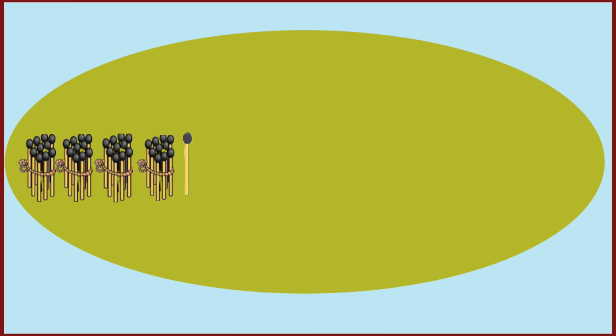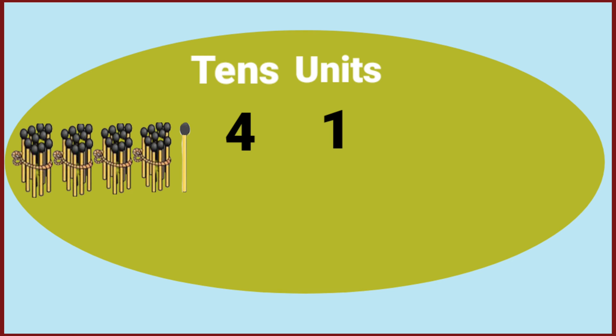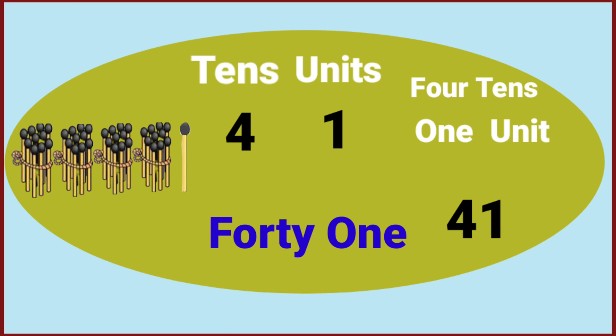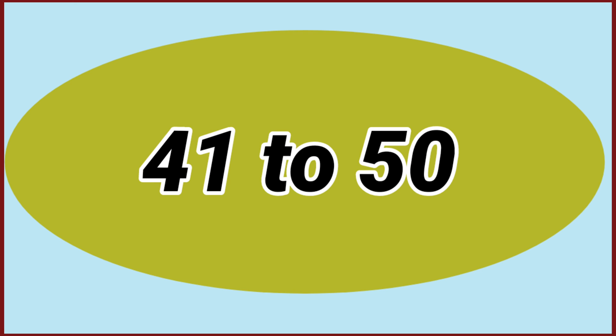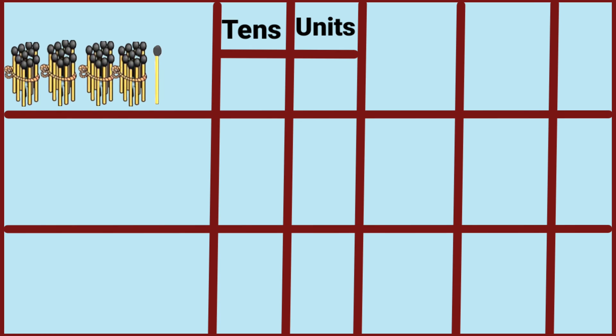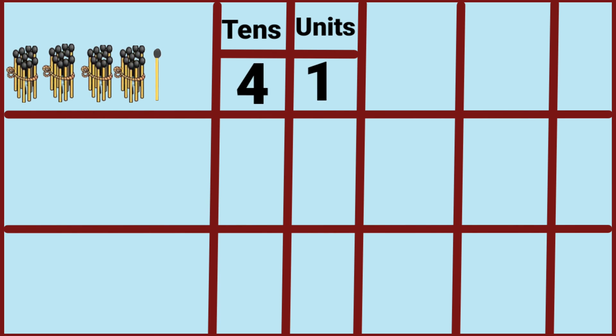Four tenths and one unit makes forty-one. We are learning numbers forty-one to fifty. Four tenths and one unit equals forty-one.